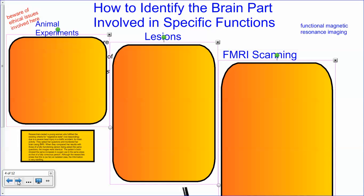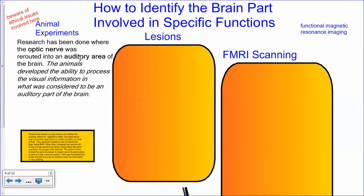How do we know what we know about the brain and what parts do various things? There are some ethical issues involved. In experimental research, scientists have actually opened up the brains of animals — this has been done before, though it's controlled more carefully now. For example, research has been done where the optic nerve was rerouted into an auditory area of the brain.